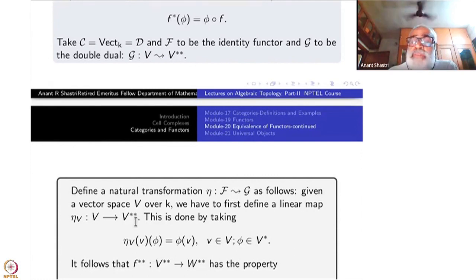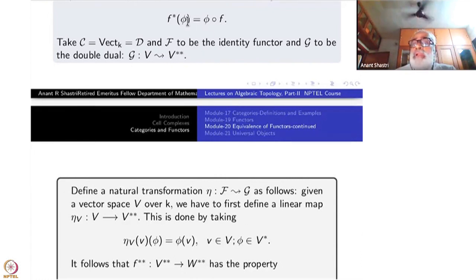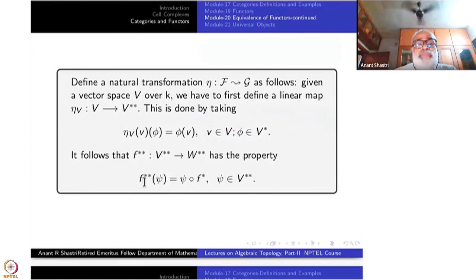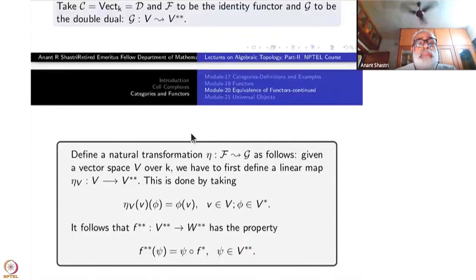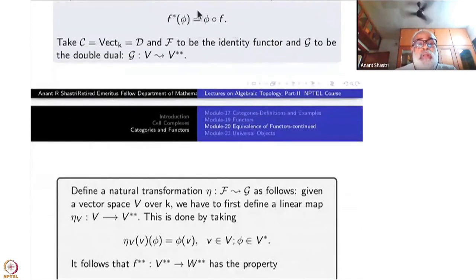I am sure you have seen these things, so you can verify the linearity part easily. Here v is in V, phi is in V star, and V star consists of linear maps from V to k. It follows that f double star — which is G of f in this notation — has the property that f double star of psi equals psi composite f star. You just verify this by combining definitions and repeating the f composition once more.